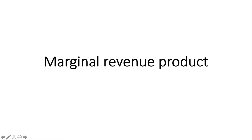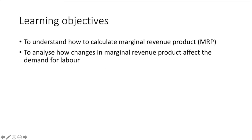In this video, we will learn about the firm's demand for labour. Specifically, we'll calculate the marginal revenue product for a firm and work towards understanding why exactly it is the firm's demand curve for labour. Once we've covered that, we will next look at how changes in MRP or marginal revenue product affect the demand for labour.